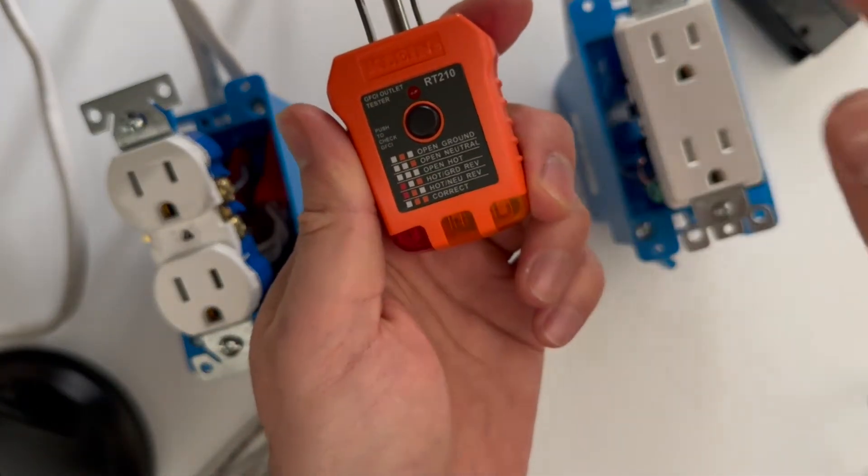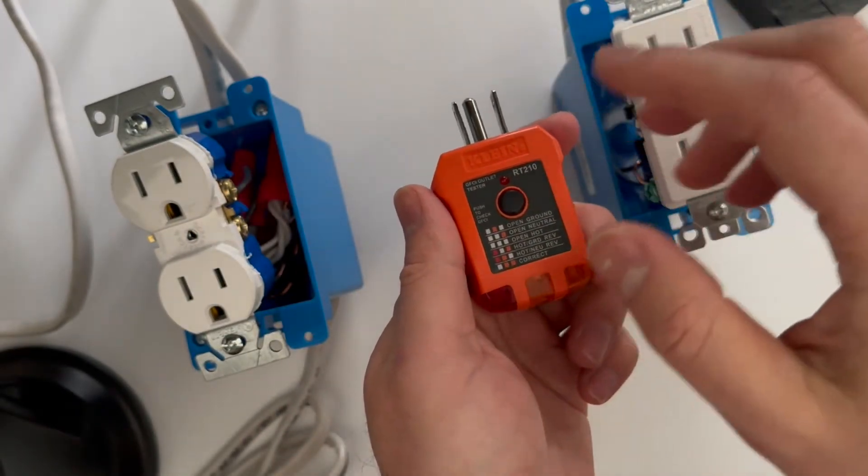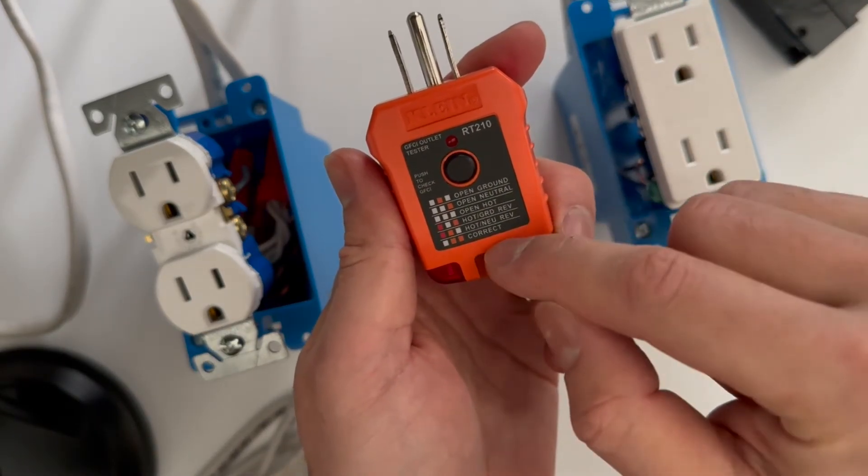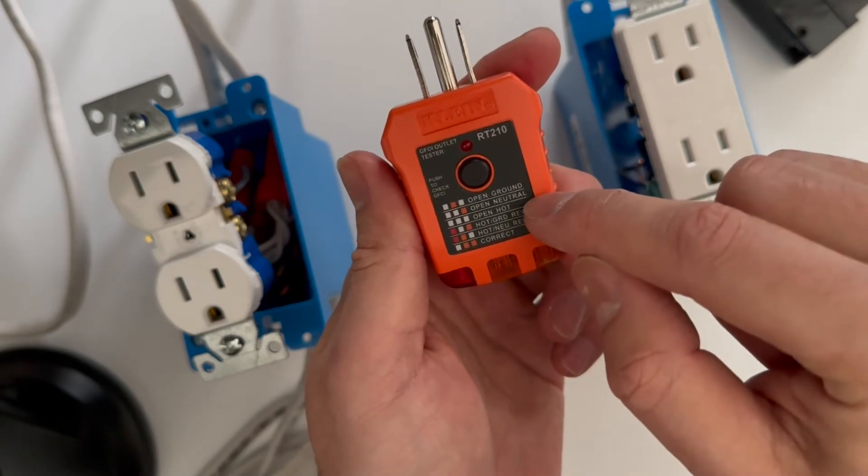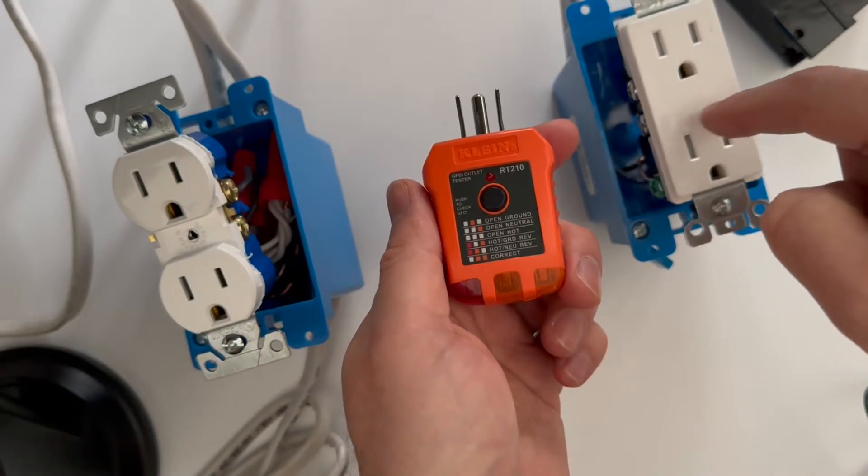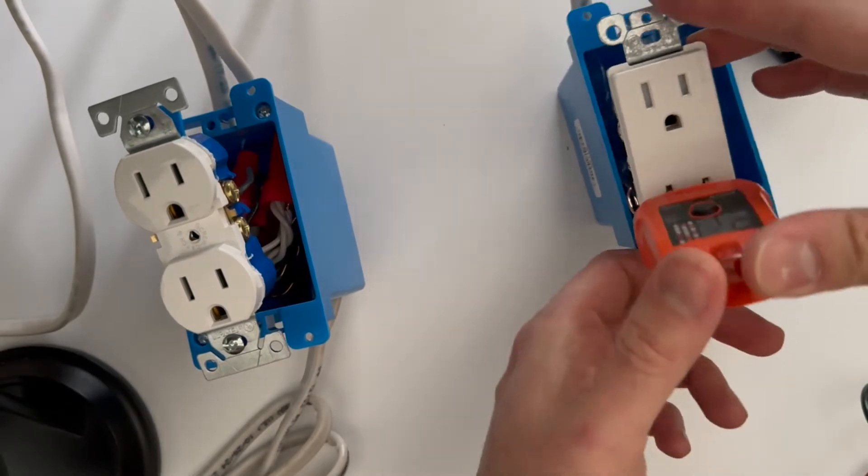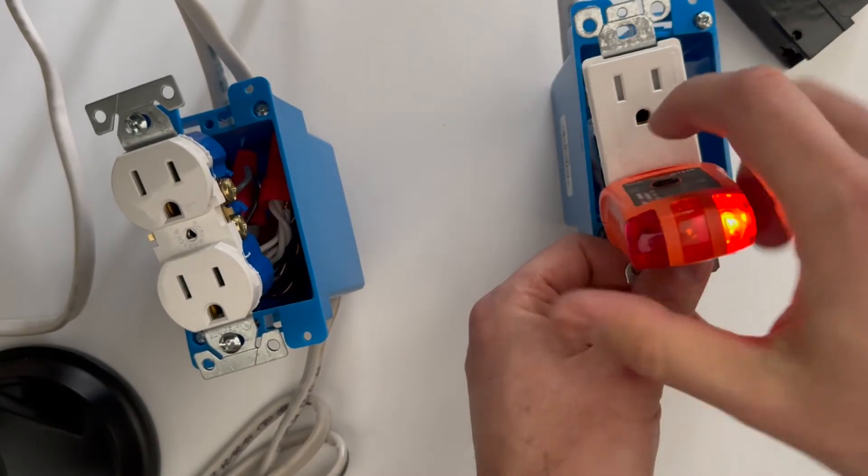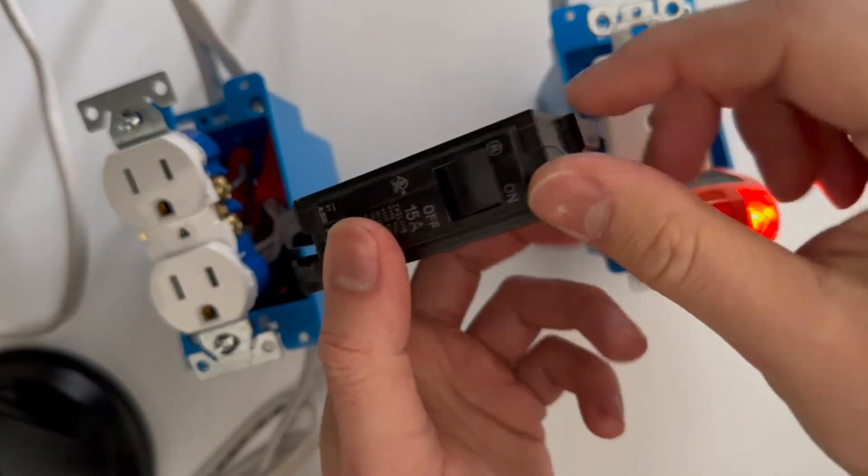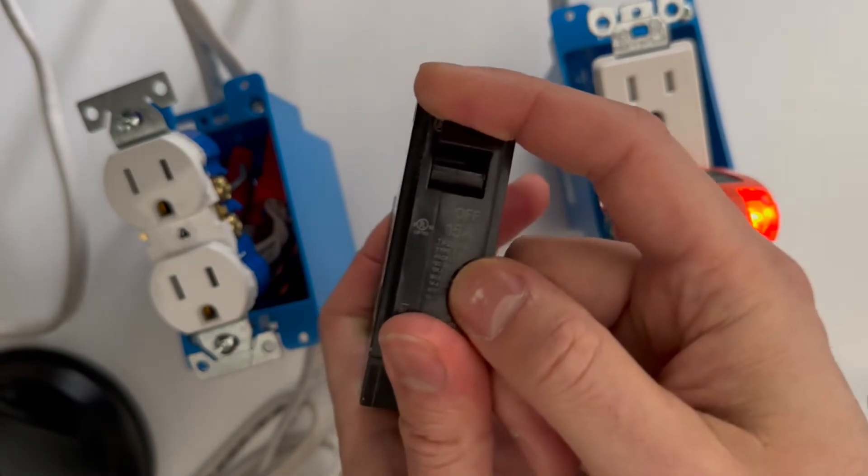If your circuit has been working just fine and all of a sudden you have this situation where you have hot ground reversed and open neutral, you're not necessarily looking for a problem in the outlet that's testing this way because you might have many outlets. If it's a 15 amp circuit breaker, you will have around eight devices.